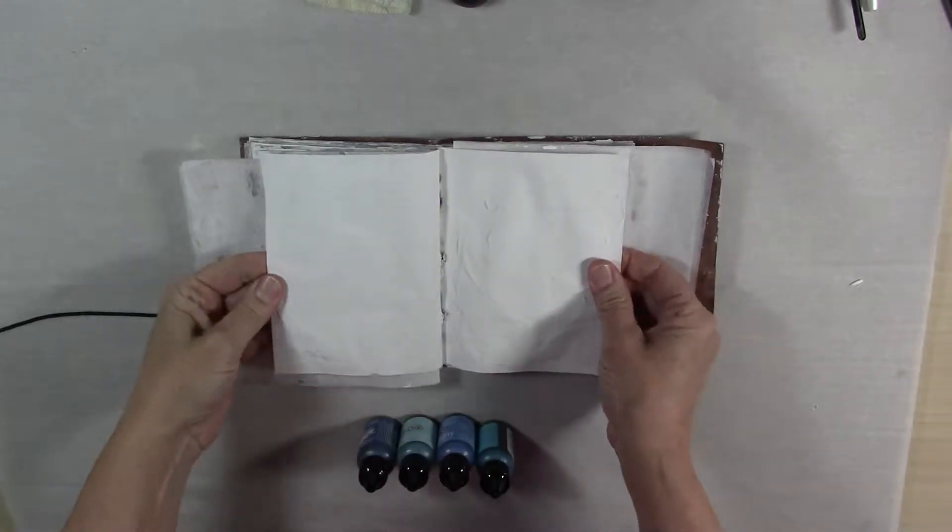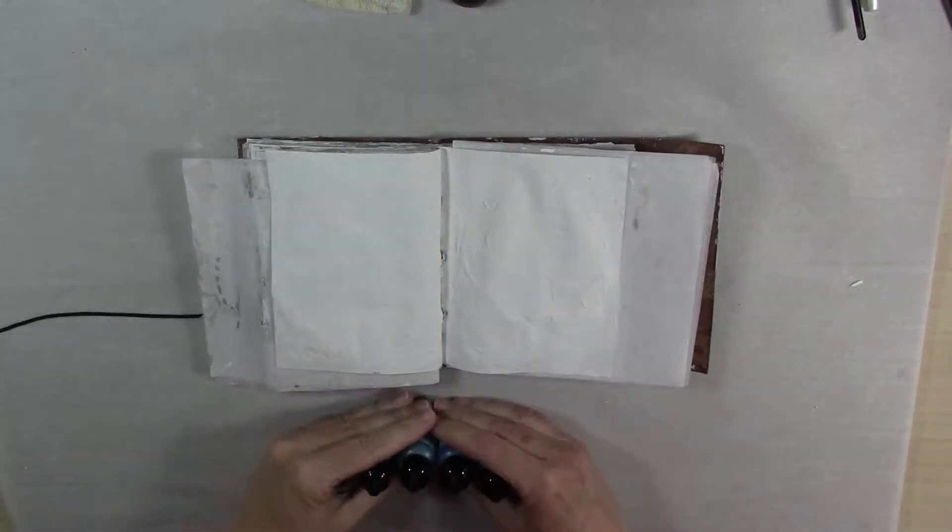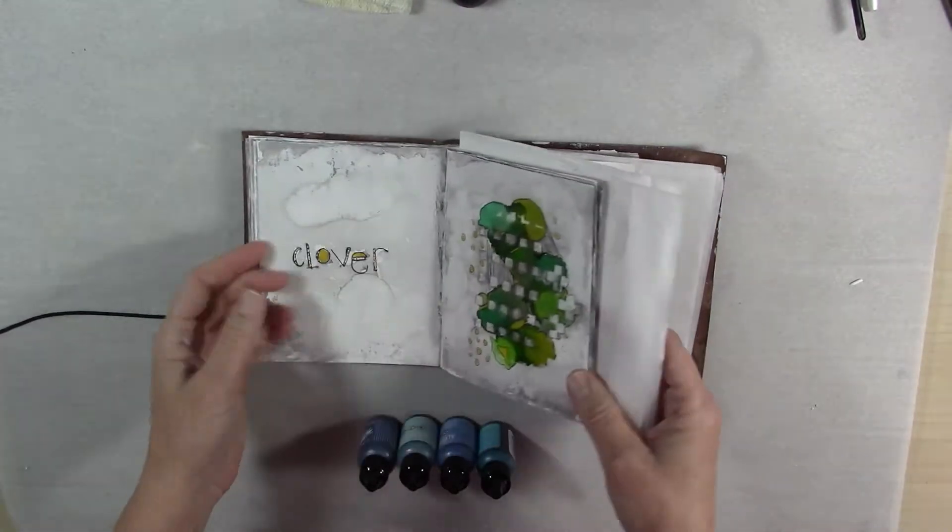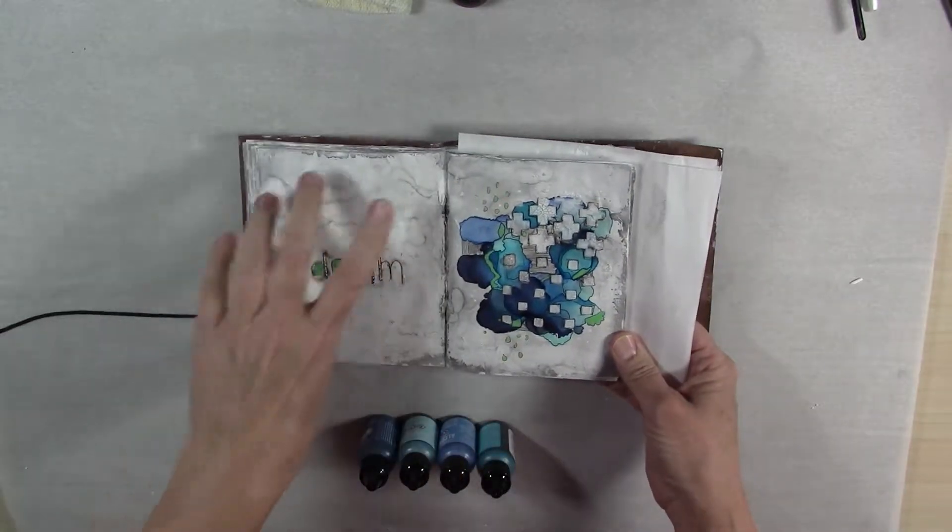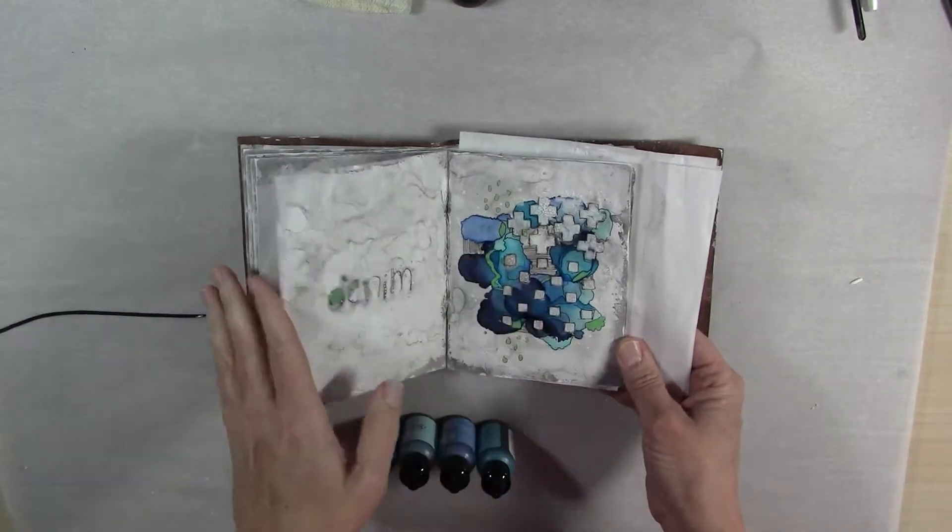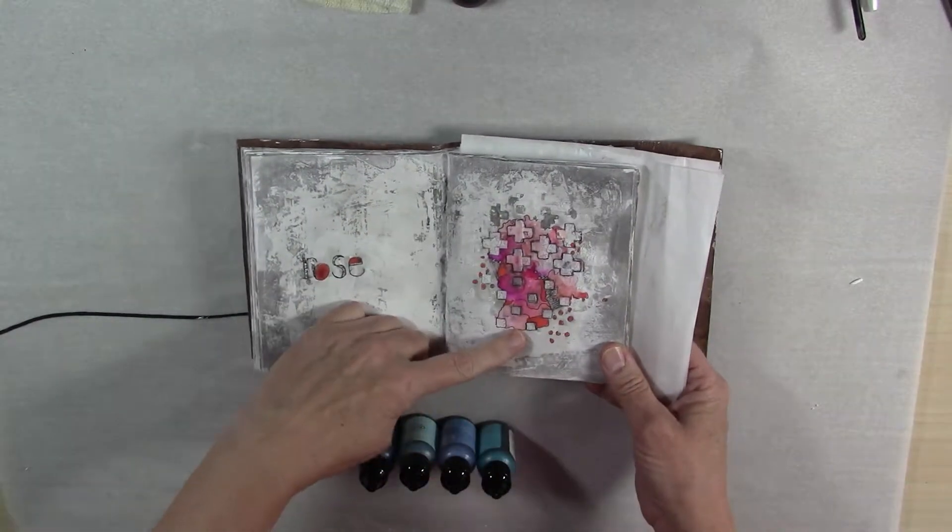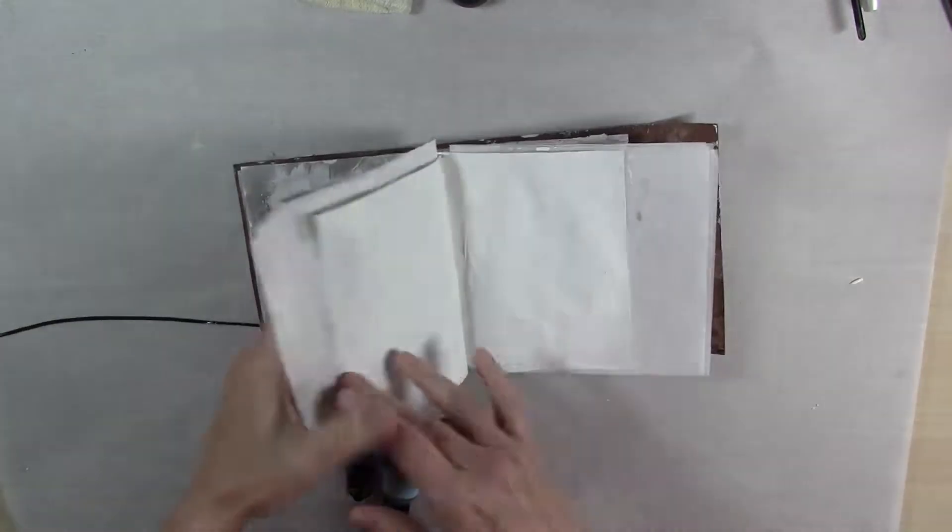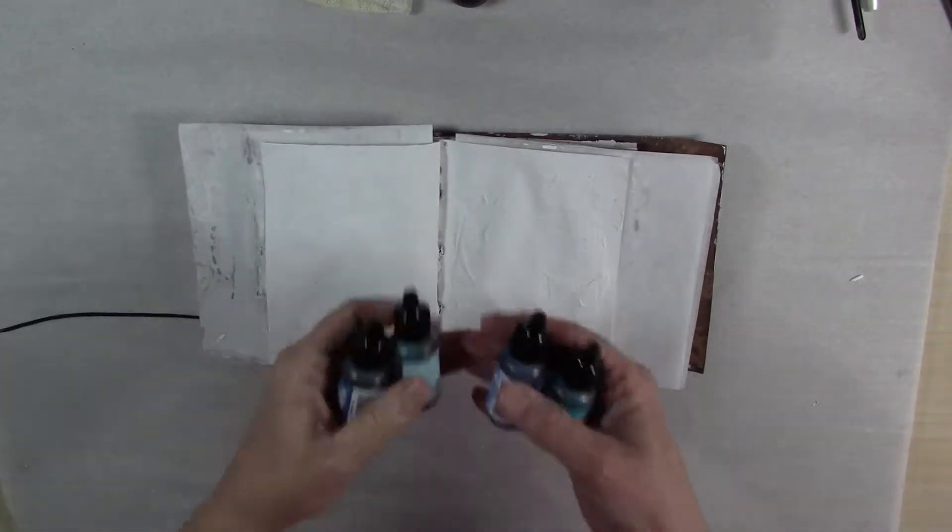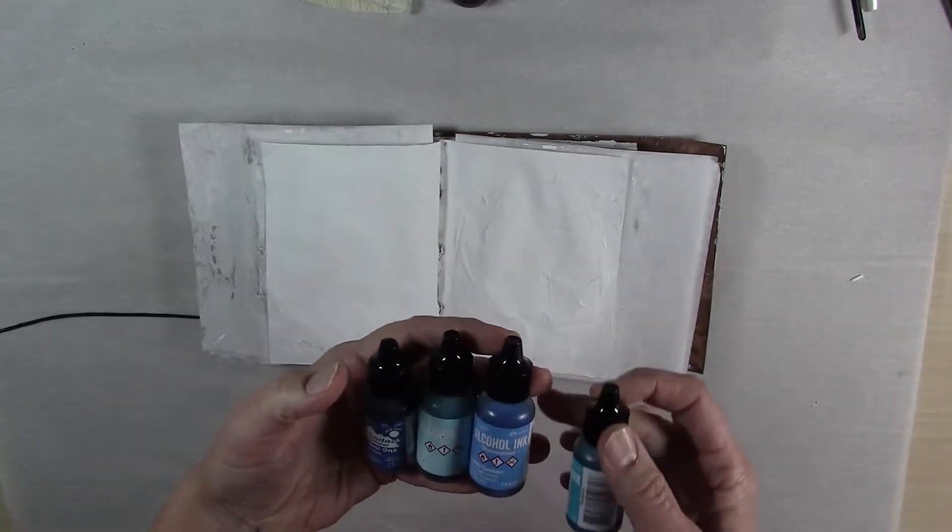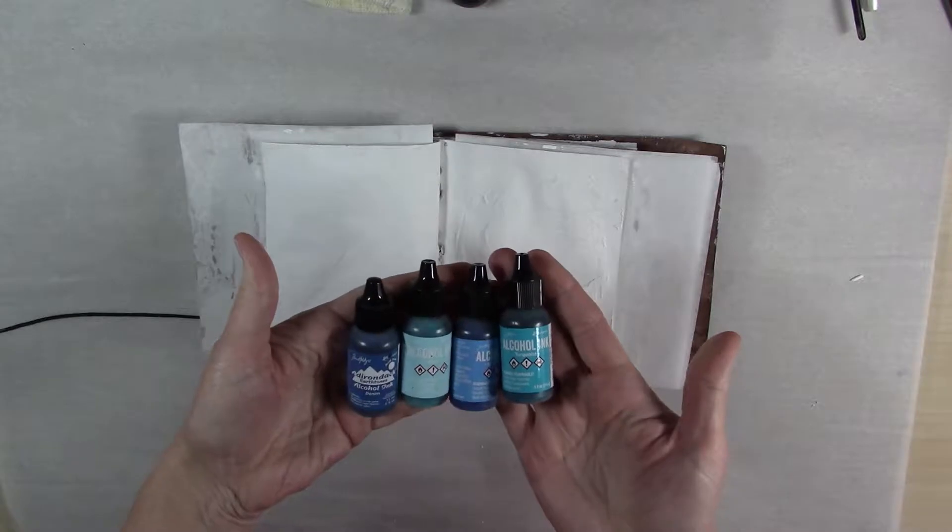Okay, my gesso has dried on my page so I'm ready for the next step. What I did on each one of my pages here, I use four different colors of alcohol ink. So I did four pages of each color scheme. There's four blue pages, four green pages, four reddish pink pages, four yellow pages. So I've got the four colors of alcohol ink that I used on my pages: denim, aqua, stonewash, and turquoise. I thought that made a great color combination.